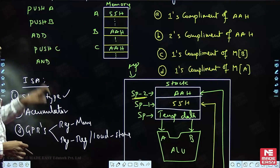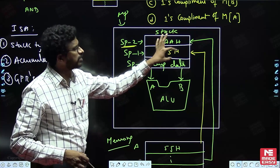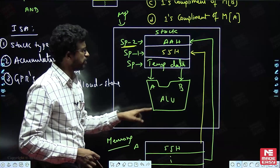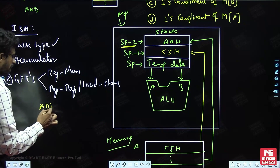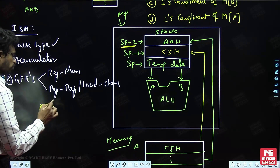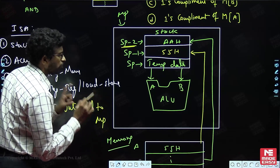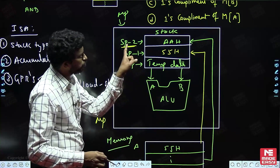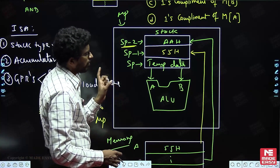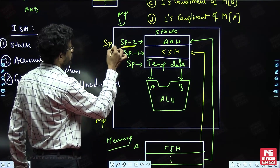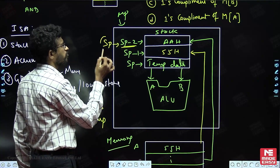After the two push operations, the next instruction is ADD. ADD means add the data present at the top of the stack. Operand 1 and operand 2 are automatically popped by the processor into the ALU. After the first pop, SP becomes SP plus 1; after the second pop, SP becomes SP plus 2, back to the initial stage.